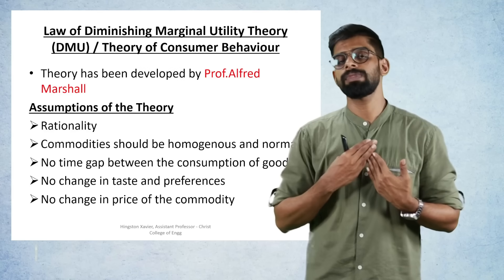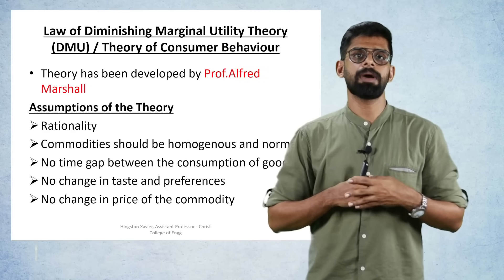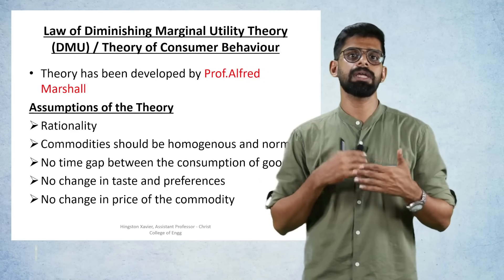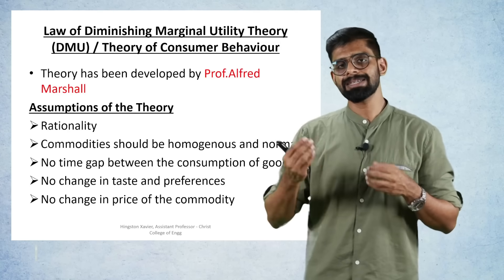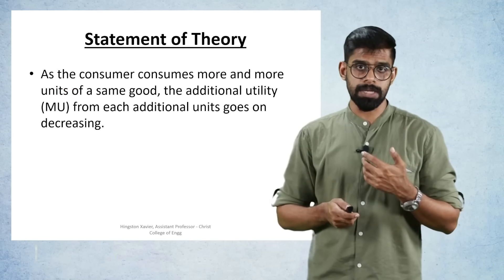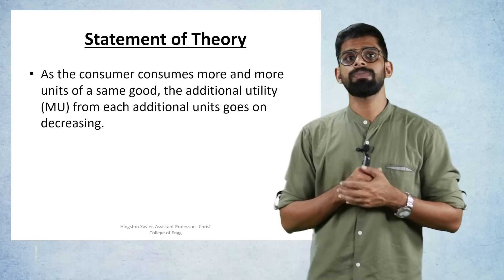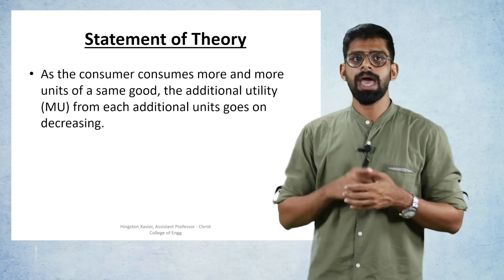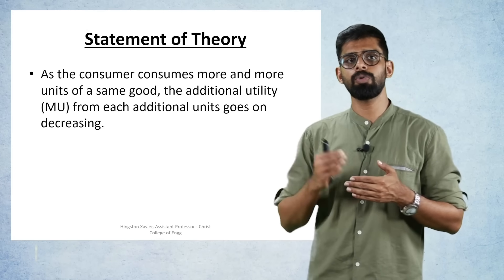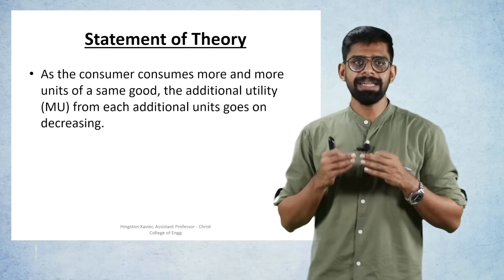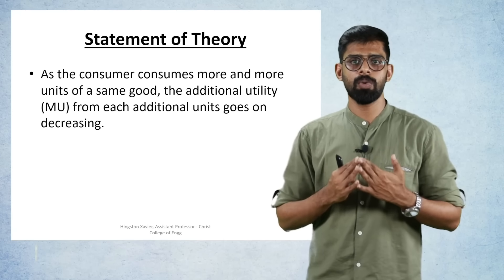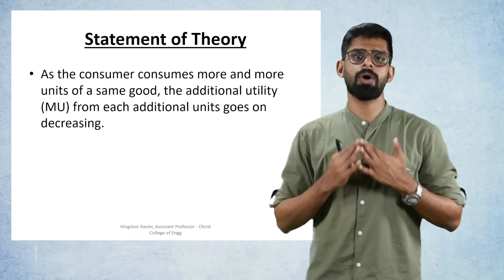This particular theory was put forward by Professor Alfred Marshall. Now, the statement of the theory goes like this: as the consumer consumes more and more units of the same good, the additional utility from each additional unit goes on decreasing.